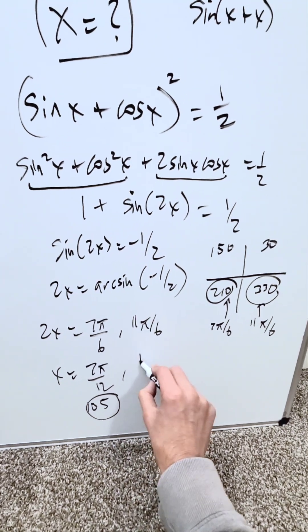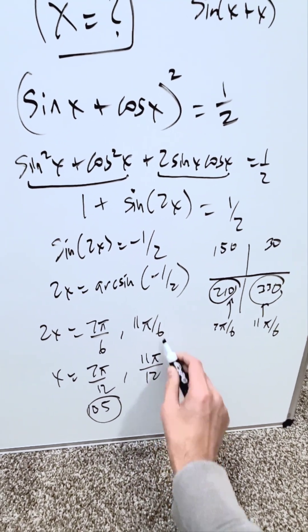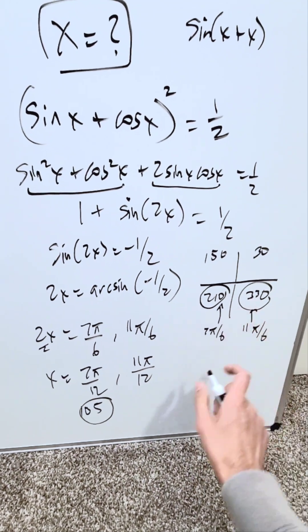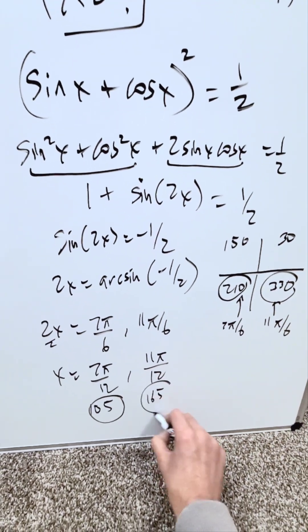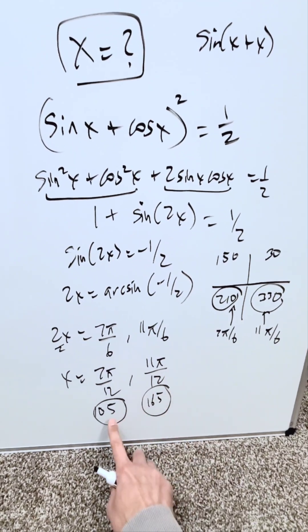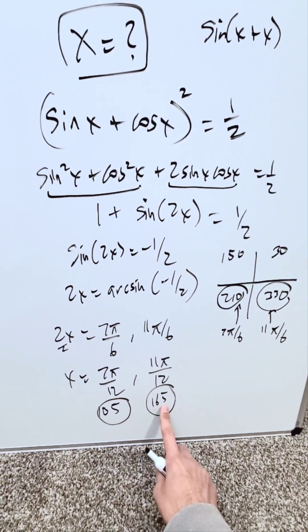And then I have 11 pi over 6 over 12 because I'm dividing everything by 2. That was originally 330 divided by 2, which is 165 degrees. You have 2 answers: 7 pi over 12 and 11 pi over 12, representing 105 and 165 degrees.